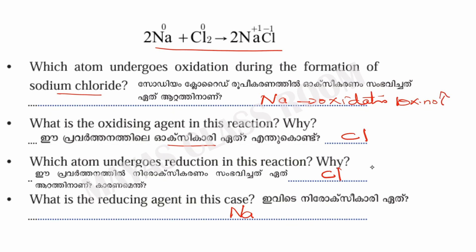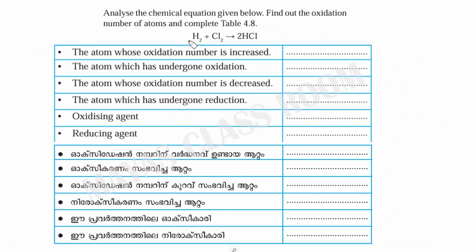The oxidation number increases — that is oxidation. The reduction in this reaction is chloride. There are two key points here: the oxidation number is increased for oxidation, and the oxidation number is decreased for reduction. There will be a question here.